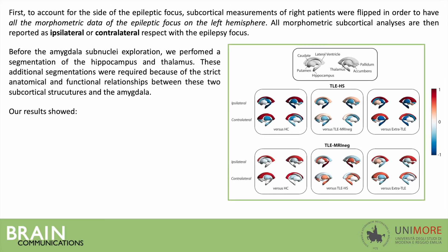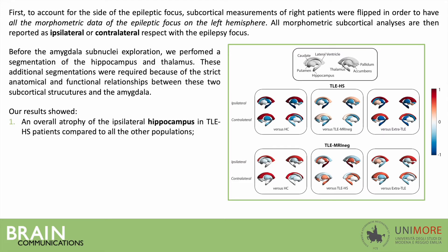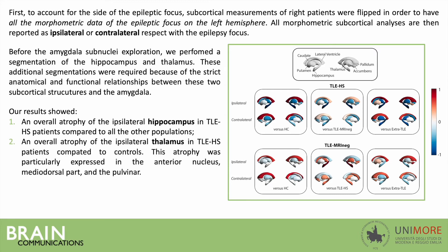Our results showed an overall atrophy of the ipsilateral hippocampus in TLE with hippocampus sclerosis patients compared to all other populations, and an overall atrophy of the ipsilateral thalamus in TLE with hippocampus sclerosis patients compared to controls. This atrophy was particularly expressed in the anterior nucleus, mediodorsal part, and the pulvinar.